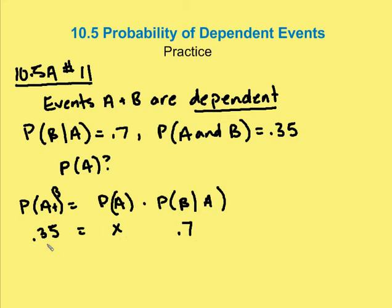So I know that the probability of A is going to be 0.35 over 0.7. And so the probability of A is going to be 50%.